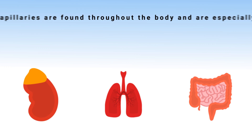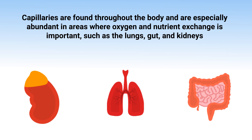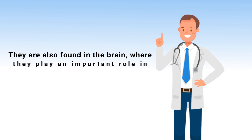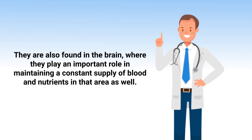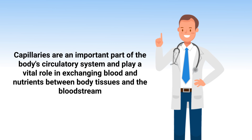Capillaries are found throughout the body and are especially abundant in areas where oxygen and nutrient exchange is important, such as the lungs, gut, and kidneys. They are also found in the brain, where they play an important role in maintaining a constant supply of blood and nutrients.